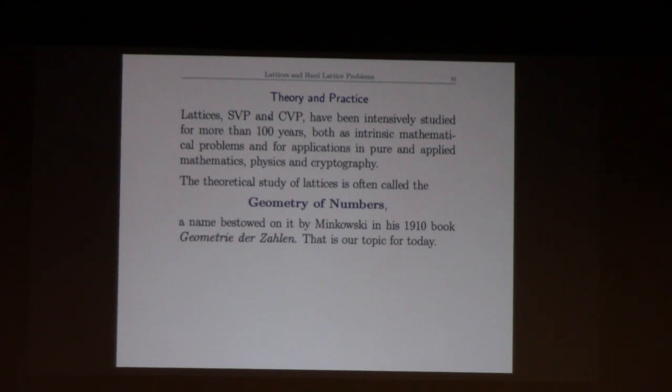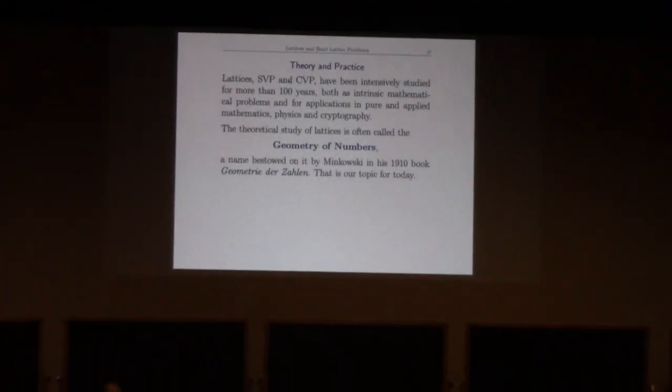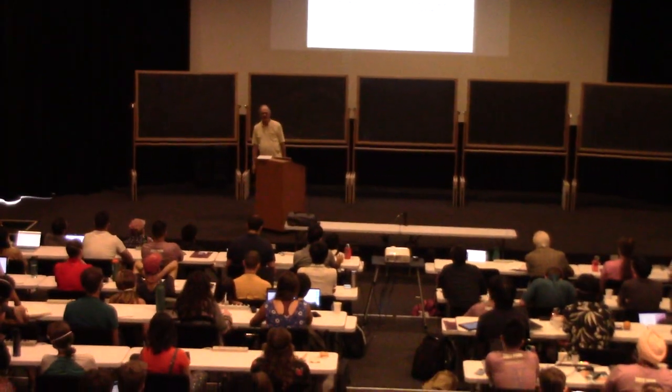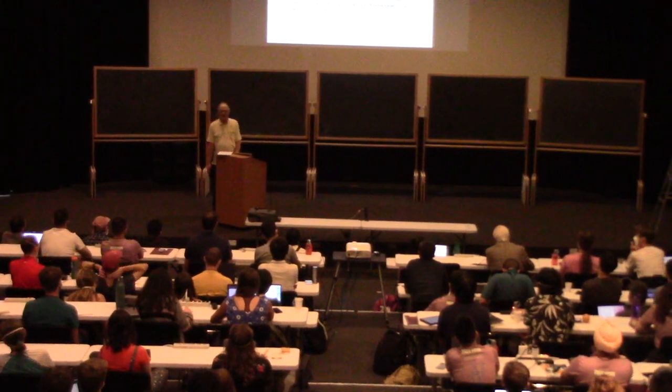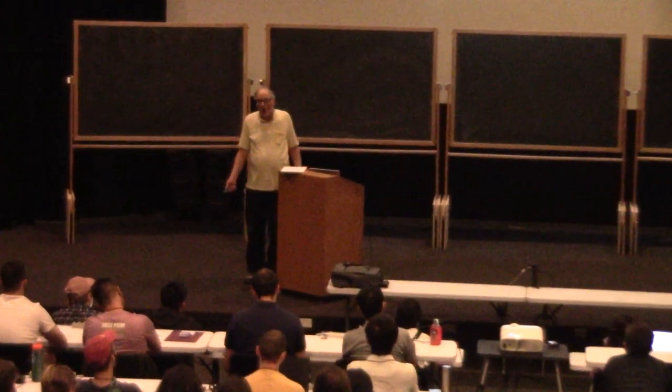This is the same Minkowski who is famous in physics. He was also a number theorist. So the practical process of actually finding a shortest or closest vector is called lattice reduction. I'll talk about the best known algorithms tomorrow. If you can come up with a much faster algorithm to solve these problems that would be really interesting.